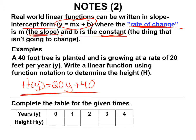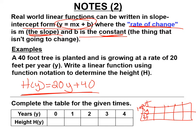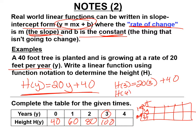Let's complete the table with years as the input and height as the output. When y is 0, height is 40 — that's our y-intercept. When y is 1, 20 times 1 plus 40 gives 60 feet. At 2 years: 80 feet. H of 3 equals 20 times 3 plus 40, which is 100. H of 4 equals 20 times 4 plus 40, which is 120. They follow a pattern just like functions always do.